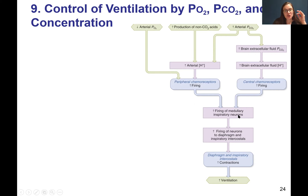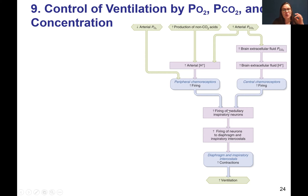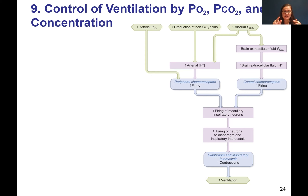Those action potentials are going to go to the medulla, where those medullary neurons regulate the automatic action potentials being sent to the diaphragm down the phrenic nerve. We get the medullary neurons for inspiration firing, and then action potentials go down the phrenic nerve to the diaphragm and also down other nerves to the inspiratory intercostals. Those action potentials go through neuromuscular junctions, stimulate action potentials in the muscle cell membranes — these are all skeletal muscles. Then we get contractions through excitation-contraction coupling, and we get an increase in the rate and depth of ventilation.